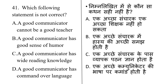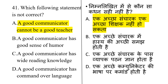Which statement is incorrect? Options are: a good communicator cannot be a good teacher, a good communicator has a good sense of humor, a good communicator has wide reading knowledge, a good communicator has command over language. The statement 'a good communicator cannot be a good teacher' is incorrect, because a good communicator can be a good teacher.